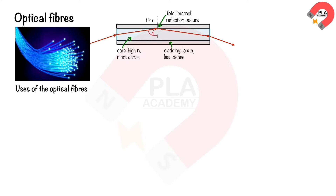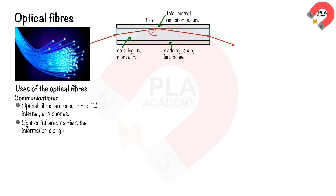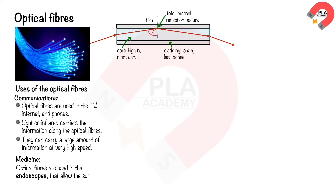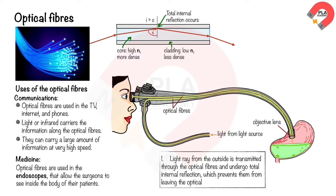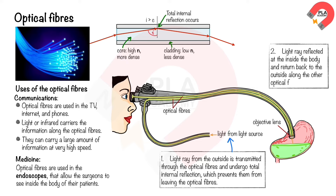Optical fibers can be used to communicate signals — for example telephone conversations — or in medical applications such as endoscopy. In communications, optical fibers are used in TV, internet, and phones, carrying large amounts of information at very high speed using light or infrared. In medicine, optical fibers in endoscopes allow surgeons to see inside patients' bodies; light undergoes total internal reflection inside the fibers, returns from inside the body, and is sent to a computer monitor.